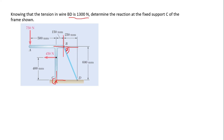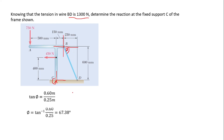Since we are finding the angle, we can use tan — this angle is opposite to 600 mm and adjacent to 250 mm. So tan φ equals 0.60 meters over 0.25 meters (converting millimeters to meters). After doing that, we get the angle to be 67.38 degrees. That's the angle we are going to use for resolving the tension.